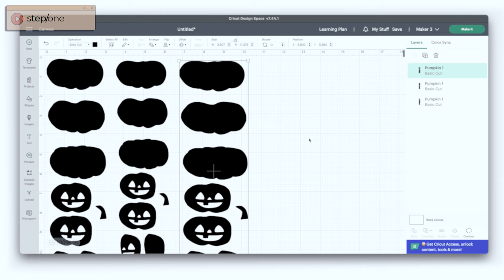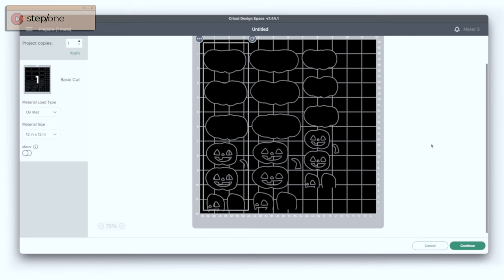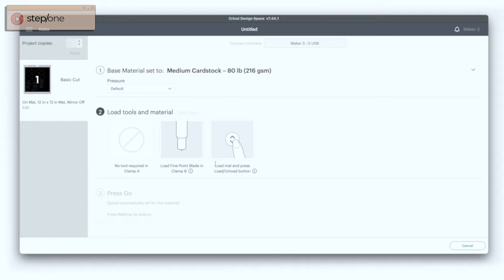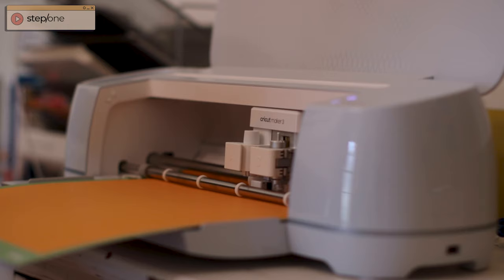Once you are happy with the placement of your shapes, go ahead and click make it. You will then be prompted on how to load the material and the size of the material that you wish to use. Once you have selected these options, you will be prompted to add the material type, load it onto your mat and then into the machine. Press go and allow the Cricut to cut the material so that we can get on to creating.